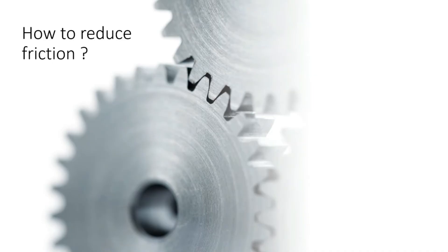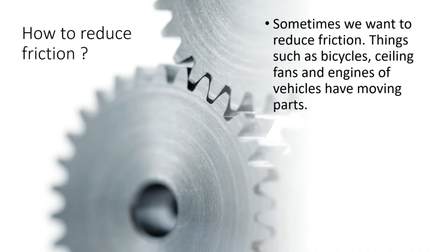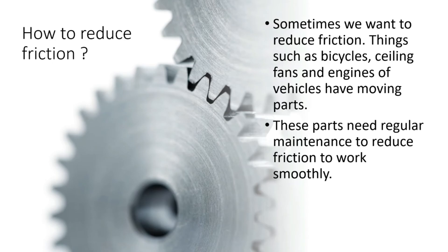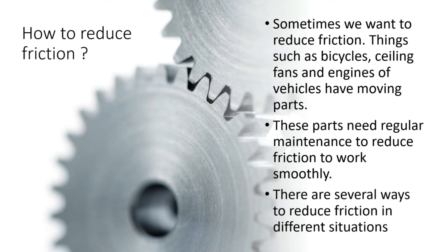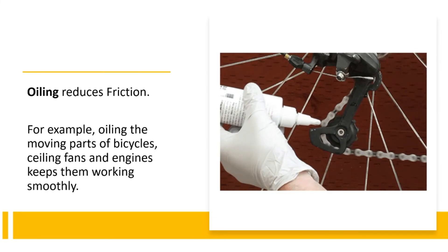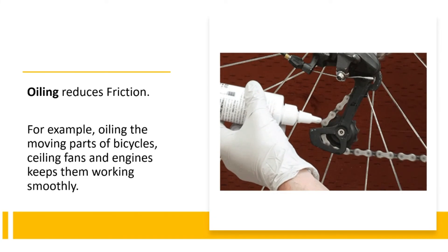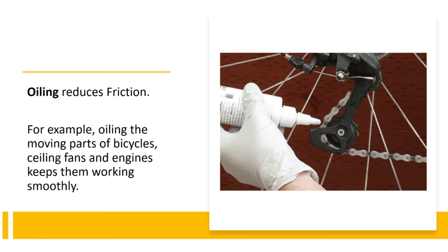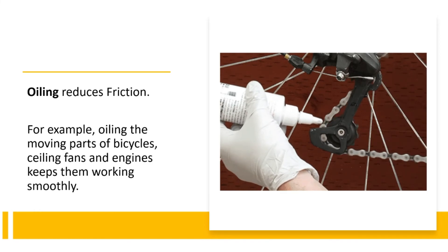Sometimes we want to reduce friction. Things such as bicycles, ceiling fans and engines of vehicles have moving parts. These parts need regular maintenance to reduce friction to work smoothly. There are several ways to reduce friction in different situations. Oiling reduces friction. For example, oiling the moving parts of bicycles, ceiling fans and engines keeps them working smoothly.